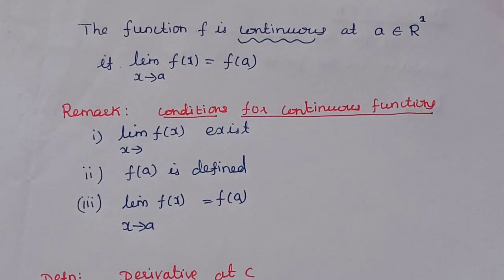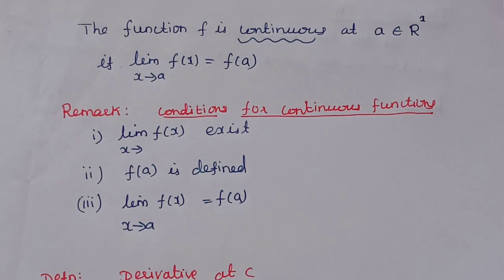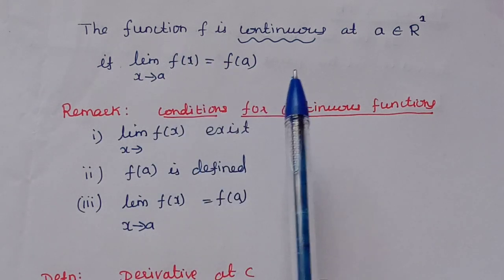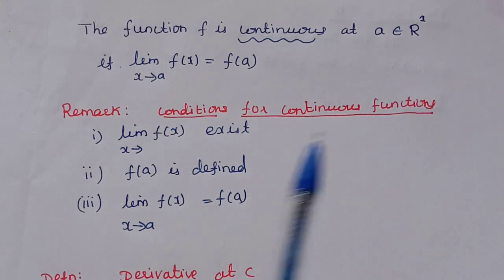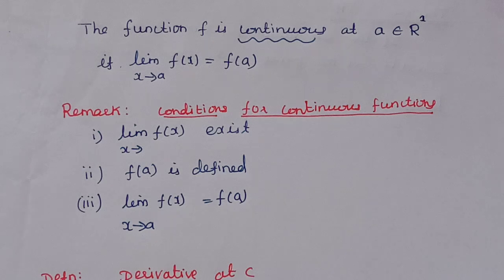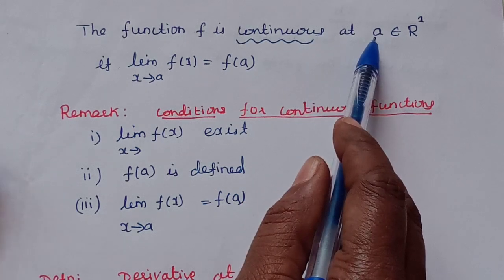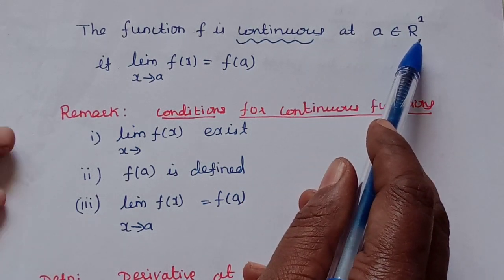We will see real analysis, Unit 4, a 5-mark question for university. We will see the definition of the continuous function. The function f is continuous at a point a belonging to R1. R1 is the metric space where the distance function is the modulus — the metric space on the real line. If the function f is continuous at the point a, where a belongs to the metric space R1.